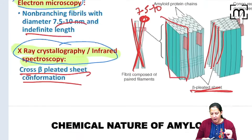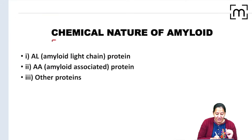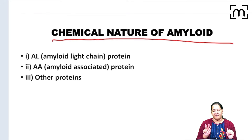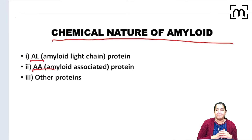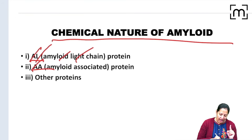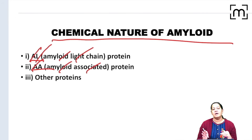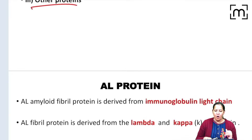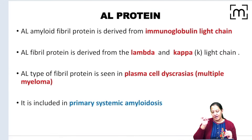Now coming on the chemical nature of amyloid. There are two main types: AL and AA. AL stands for amyloid light chain, and AA stands for amyloid associated protein. These are the two main amyloid types, and apart from these there is a list of others which we will see one by one.